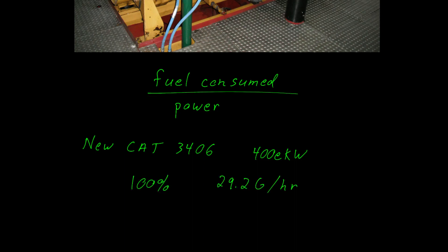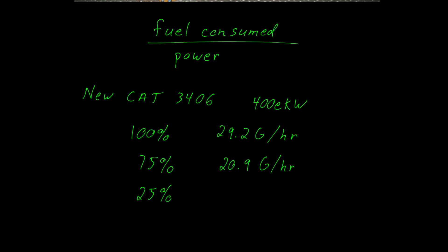At 75% load, 20.9 gallons per hour. And at 100 kilowatts, which is a quarter load, we can expect it to consume about 14.4 gallons per hour.